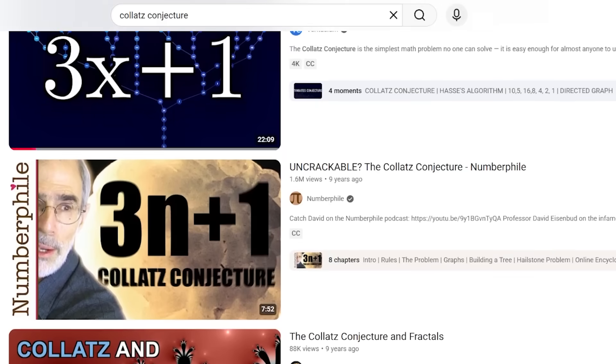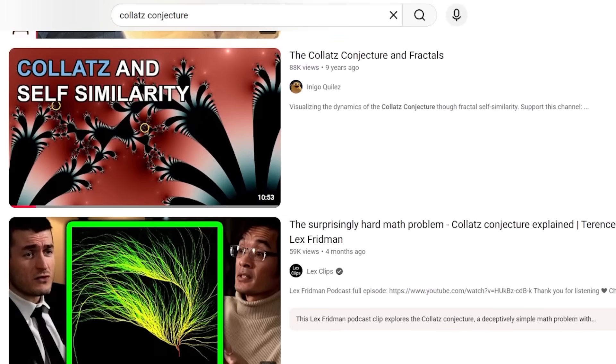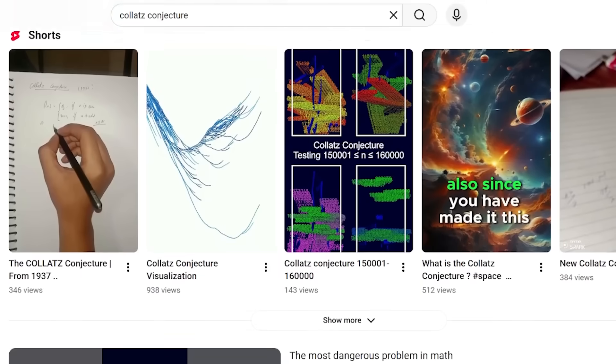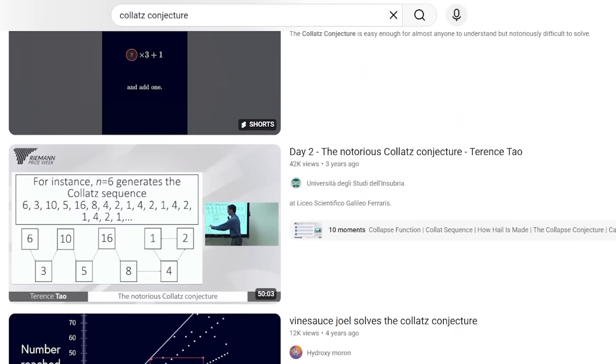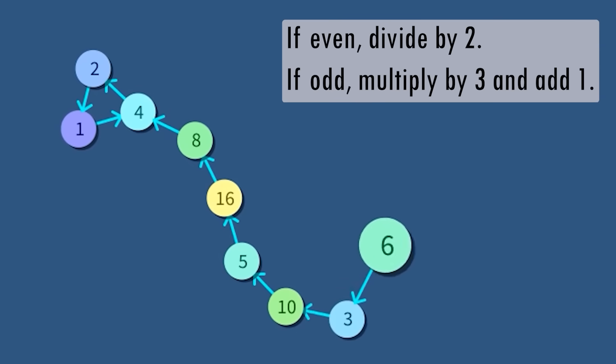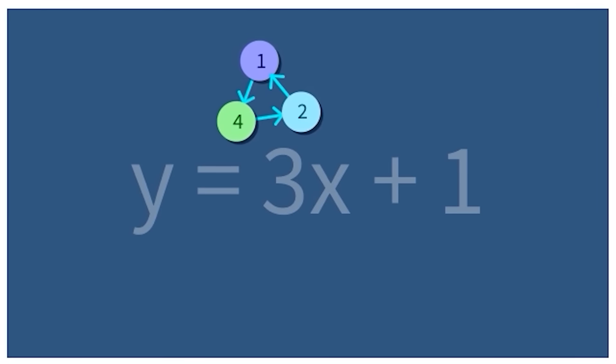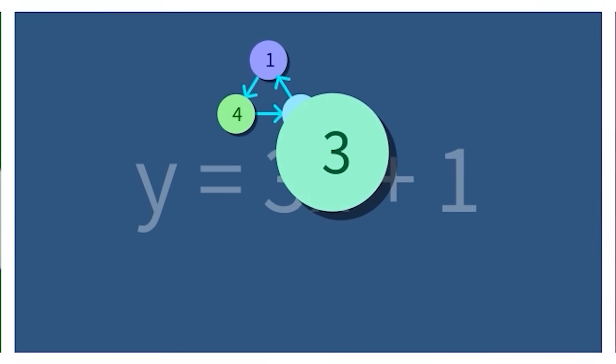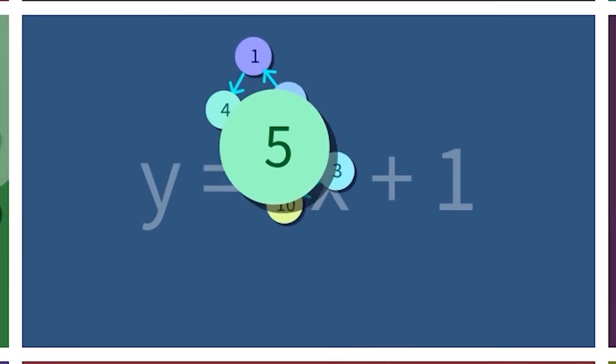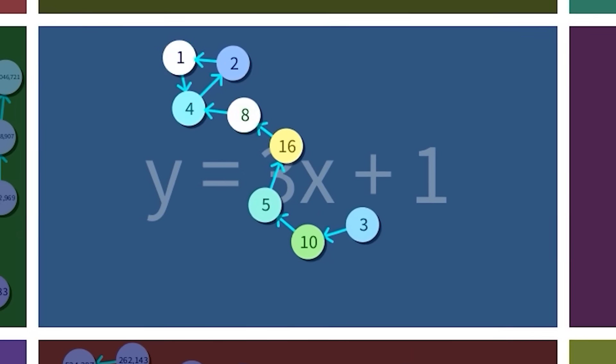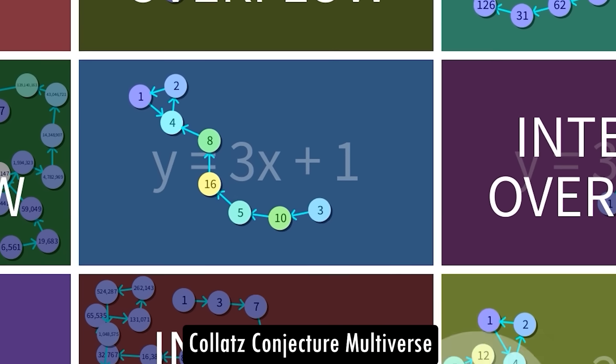But here's the thing, you've probably already seen this. The Collatz Conjecture is one of the most famous unsolved problems in math. So let me show you something you might not yet have seen. Here's the rules. Divide by 2? Multiply by 3 and add 1? These numbers are arbitrary, and we could change them to whatever we want, right? Maybe we could. Welcome to the Collatz Conjecture Multiverse.